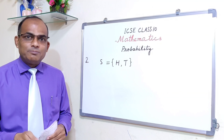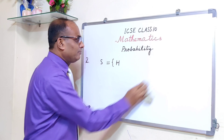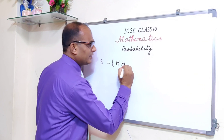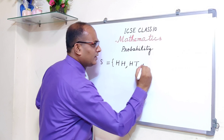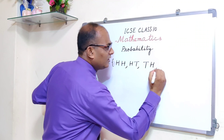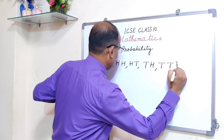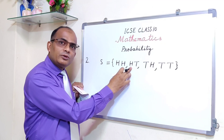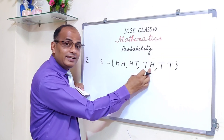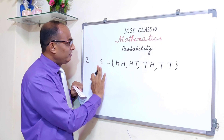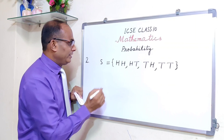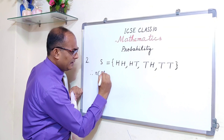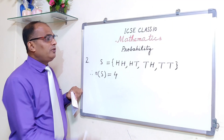Let's write down the sample space. When two coins are tossed, the possible outcomes are: HH, HT, TH, TT — first coin head second coin head, first head second tail, first tail second head, both tails. So the sample space S = {HH, HT, TH, TT} and n(S) = 4.